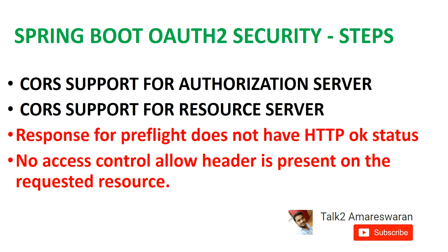For example, your web application is running on localhost 9090. Then by using JavaScript or jQuery, you are calling a resource API or the token API for the authorization server. Those APIs are running on a different port, so the web browser will not allow you to access these resources. Basically, this issue depends on your authorization server or resource server not allowing those resources to a different port.